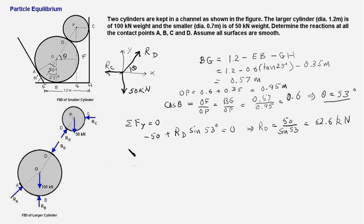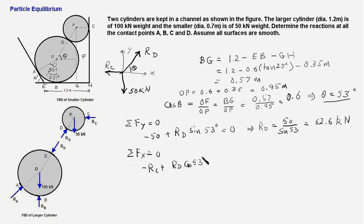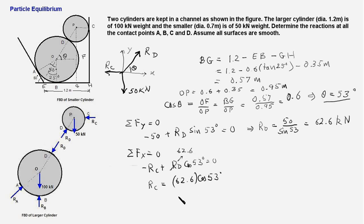Now we use the second equilibrium equation, ΣFx = 0. In the X direction we have RC and the component of RD, so: −RC + RD × cos 53° = 0. With RD = 62.6 kN, RC = 62.6 × cos 53°, which works out to 37.67 kilonewtons.